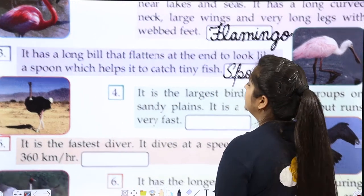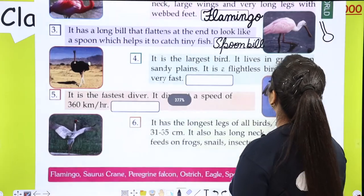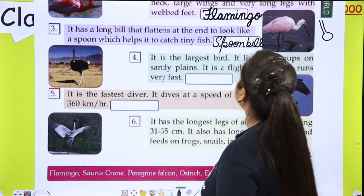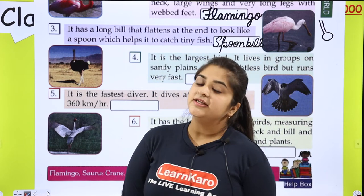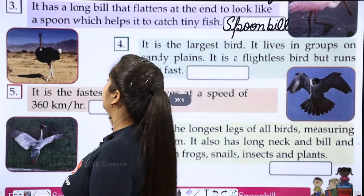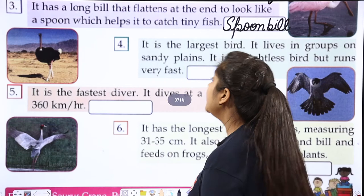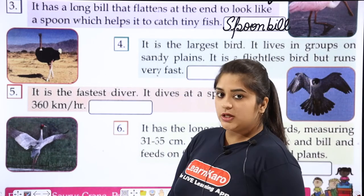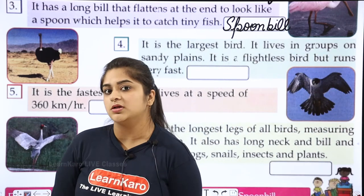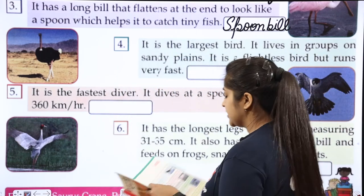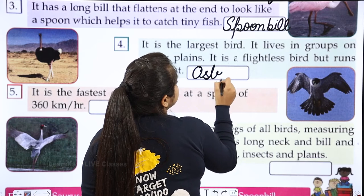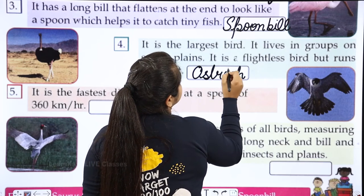It is the largest bird. It lives in groups on sandy plains. It is a flightless bird which cannot fly, but it runs very fast. And this bird's name is Ostrich.